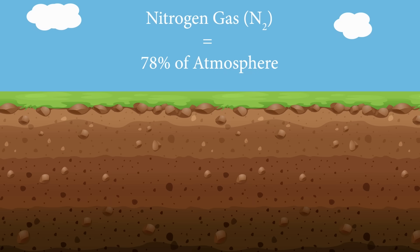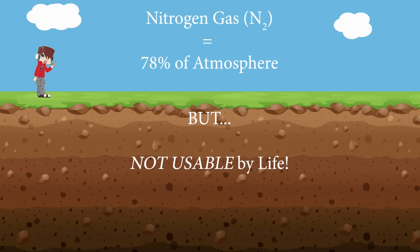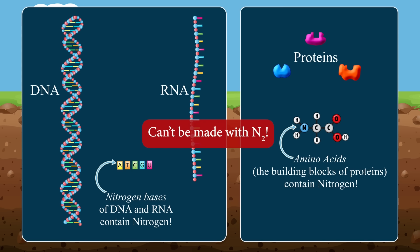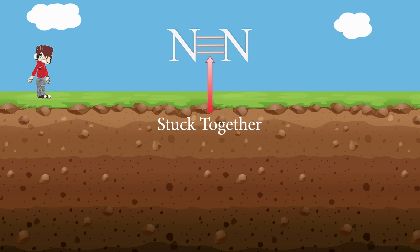Nitrogen gas, N2, makes up about 78% of our atmosphere. You breathe it in and out all the time — in fact, you're doing it right now. The problem with N2 is that you can't use it to make any of the cool molecules we just discussed. The three bonds between the nitrogen atoms in N2 make it very hard to break apart, so you can't do any reactions to make DNA, or RNA, or proteins, or anything else. The nitrogen atoms are essentially superglued together.